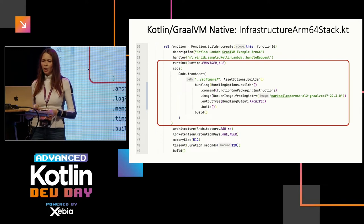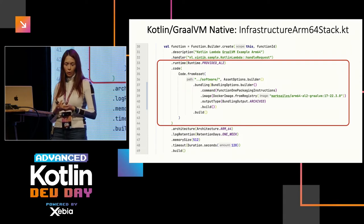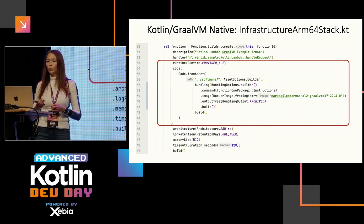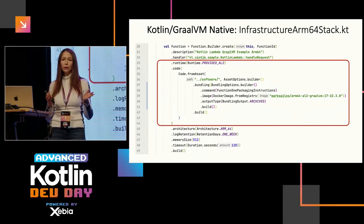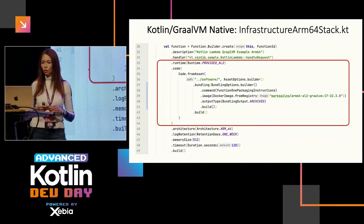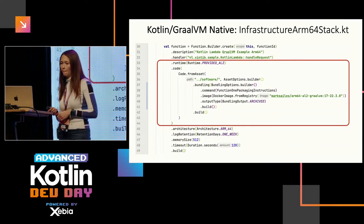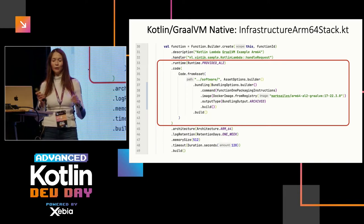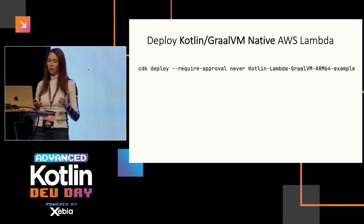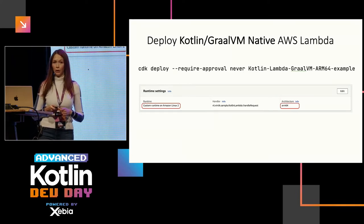Now let's deploy the GraalVM Lambda. The out-of-the-box AWS runtimes don't support native, so we provide our own runtime: we specify 'provided runtime' and give it a Docker image — I'm using an open-source Docker image for GraalVM on arm64, but you could use your own. We run CDK deploy again, and in the console we can see it's running on the custom runtime instead of the Java runtime.